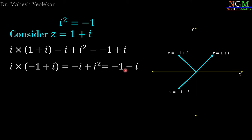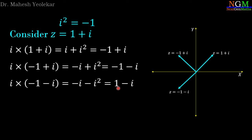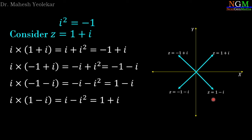One more time, we multiply -1 - i by i, then we have -i - i² and since i² = -1, we get -i - (-1) = 1 - i. And 1 - i lies in the fourth quadrant. Now we multiply 1 - i by i, then we have i - i² = i - (-1) = 1 + i, and we come back to the original vector z = 1 + i.